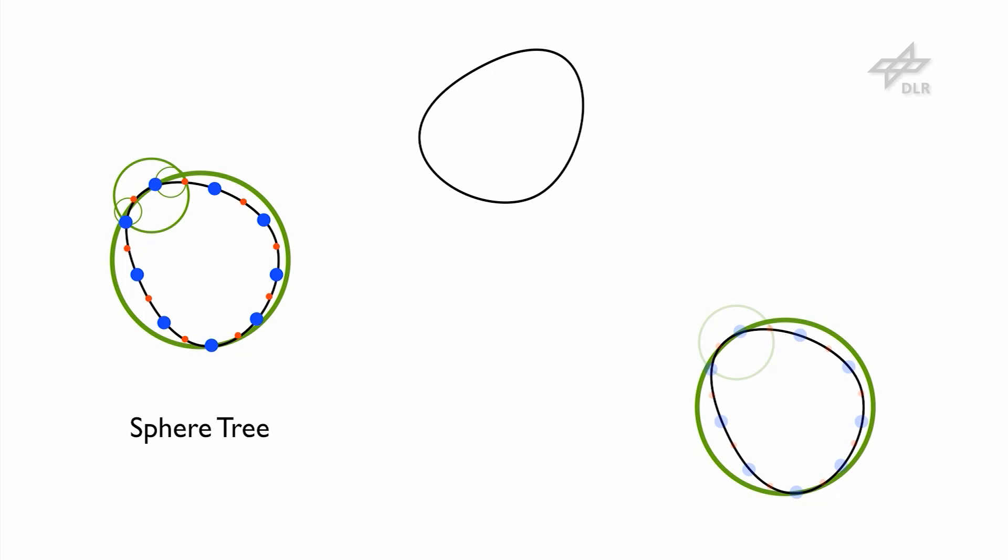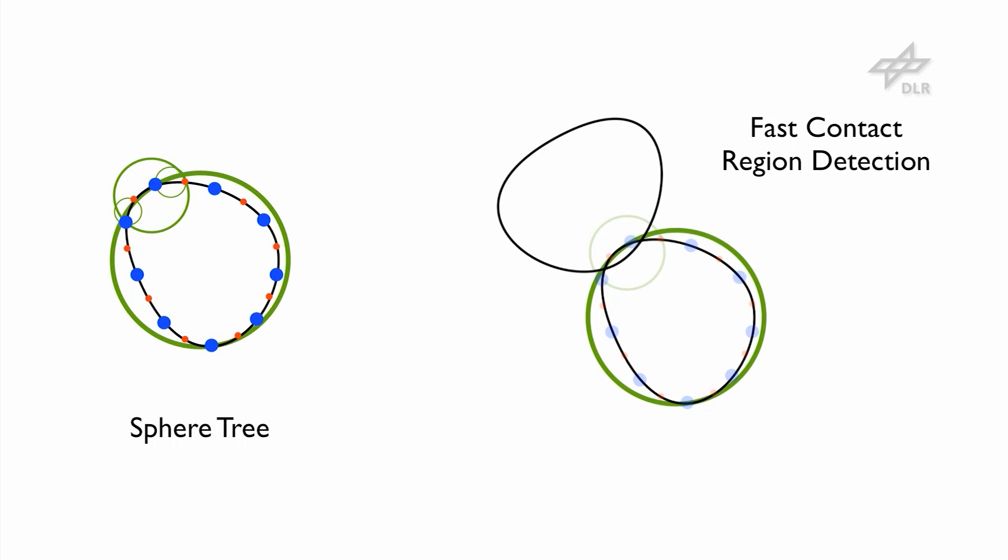Checking the collision of this bounding sphere significantly reduces computation when objects are far from each other. As soon as the objects make contact, our algorithm rapidly traverses the sphere hierarchy to find the colliding region. The points in this region are checked for collision in a level of detail manner.